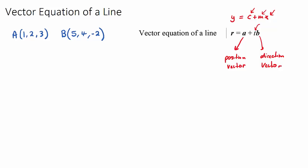These coordinates can also be written in position vector form. The position vector OA means the journey from the origin (0, 0, 0) to point A, which is just (1, 2, 3). We can turn a coordinate into a position vector quite easily by writing it in vector form. So OB would be (5, 4, -2).